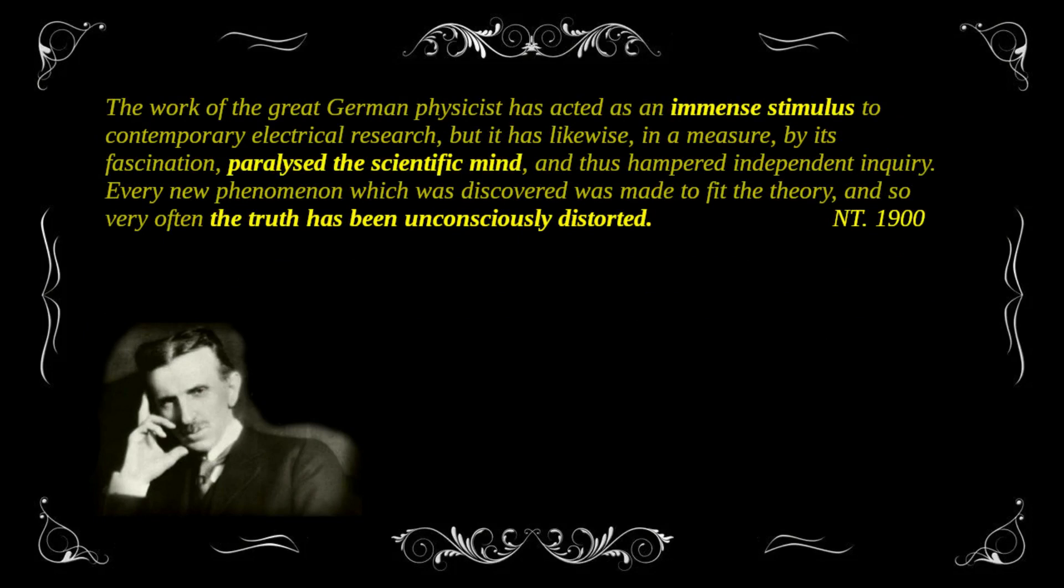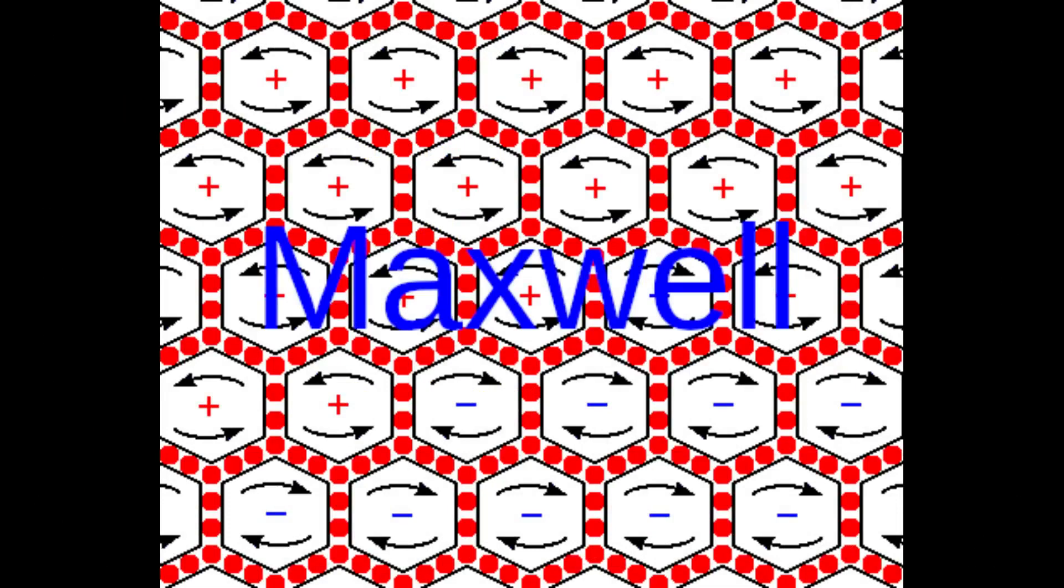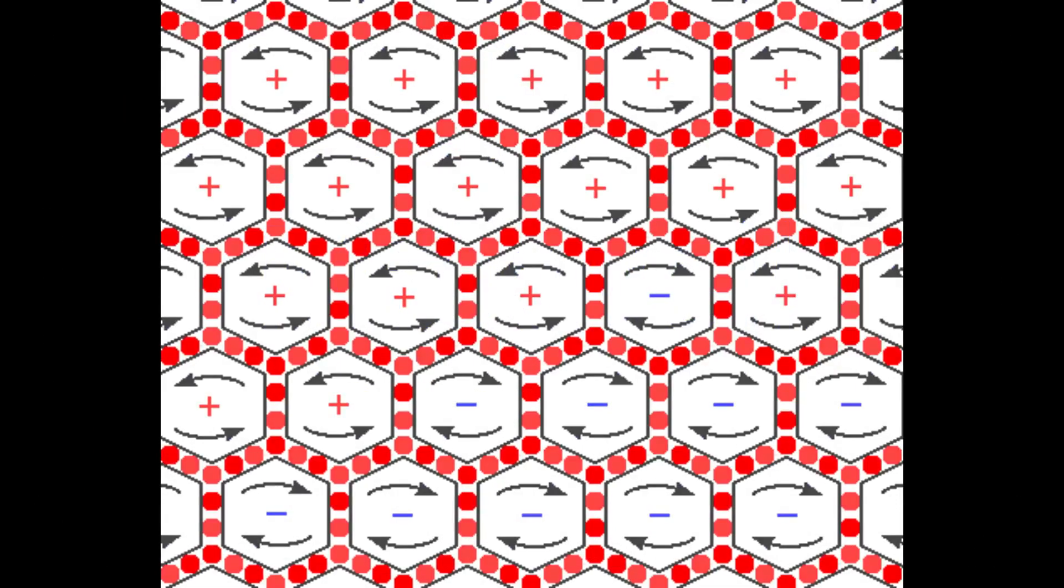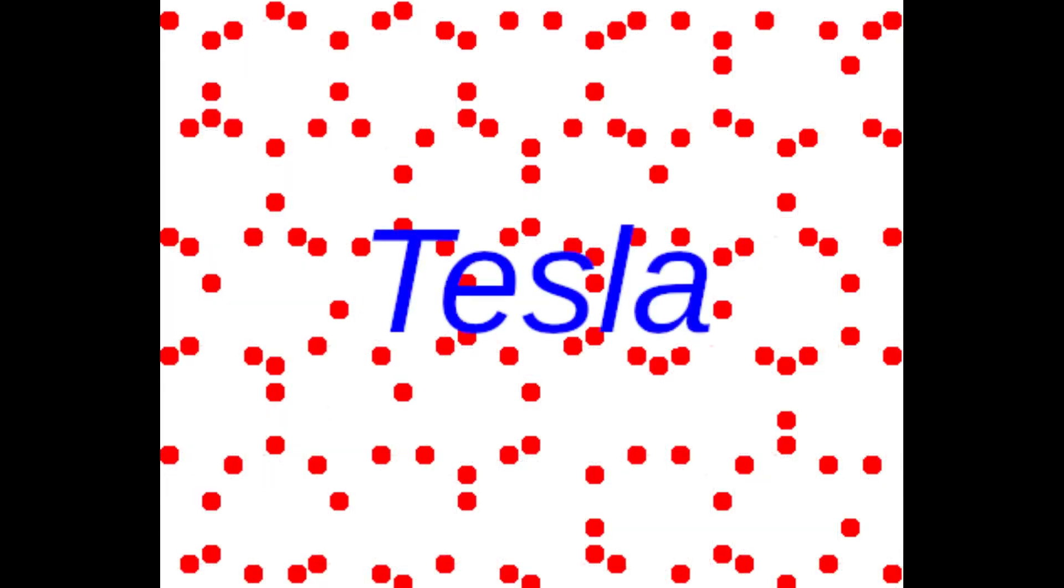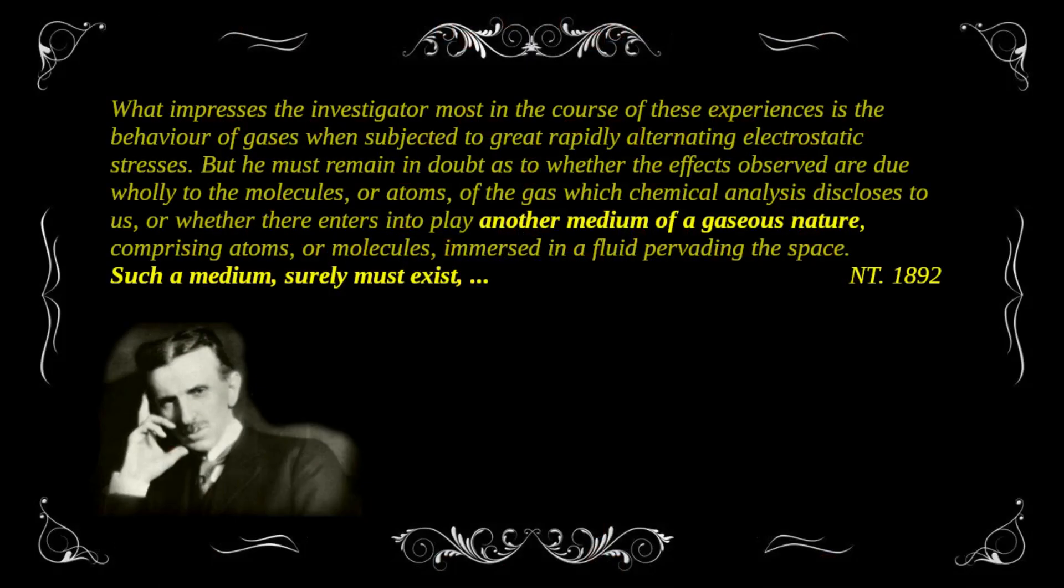Maxwell's work does not allow for standing electromagnetic waves inside the Earth. But is that what Tesla was referring to? Tesla tried to answer the question, what is electricity? And went beyond Maxwell's model of the ether to find that it must be a gaseous medium.